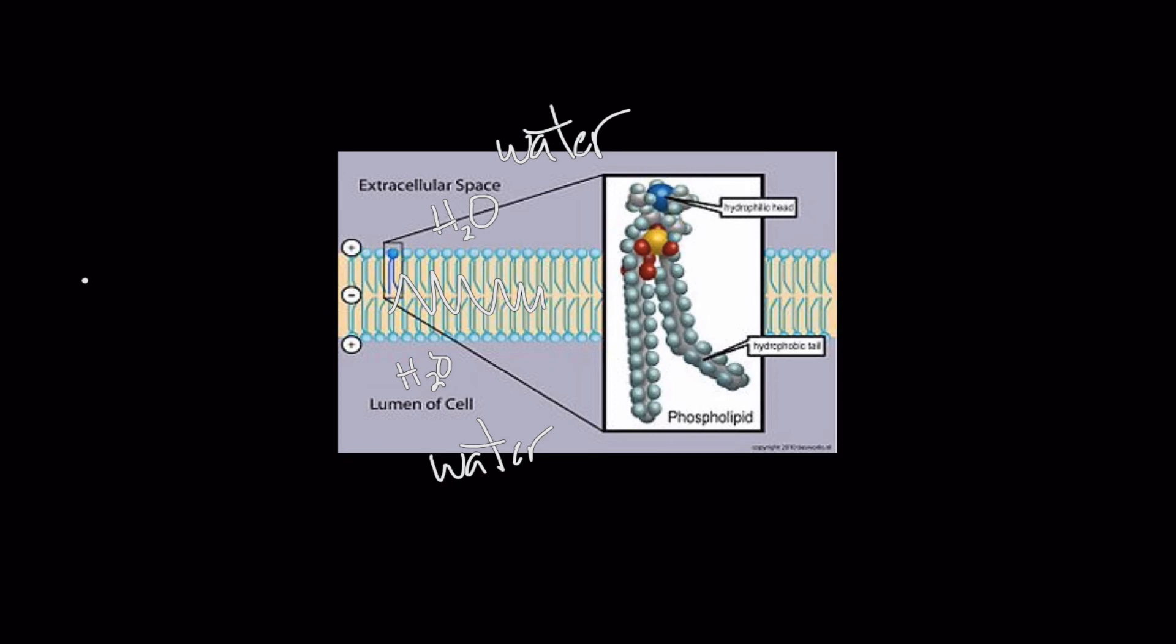The head end is dissolved in water but the tails are isolated from the water. So this is what gives us the classic bilayer structure of a cell membrane. So I'll show you another picture of this in just a minute.